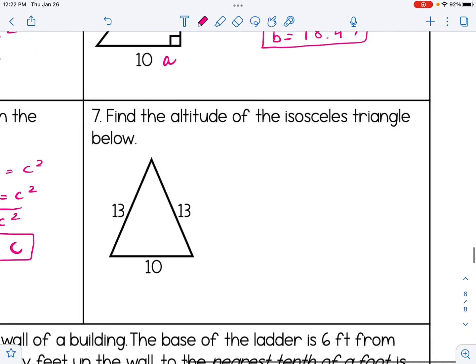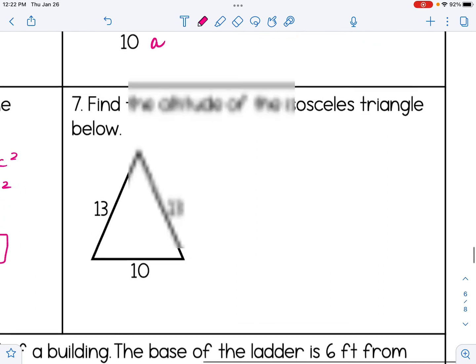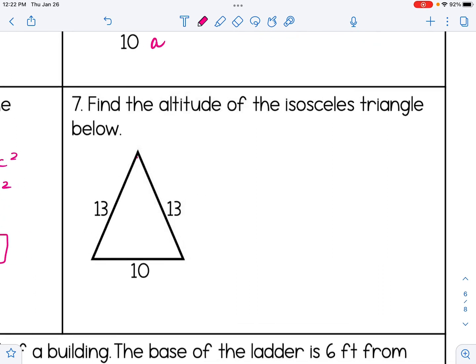All right, number 7. Find the altitude of the isosceles triangle below. We should remember that altitude means height, right? Think about it, how you've heard a plane is flying at an altitude of fill in the blank, right? That's representing the height the plane is flying at. So I'm going to draw the height in. And altitude always forms 90 degree angles with the base. Since this is isosceles, I also know that the base is going to be split in half by the altitude, 5 and 5. So if I look at this example, really what I have is two separate right triangles. Let's just look at one of them.